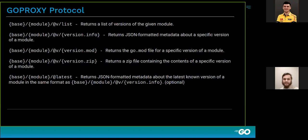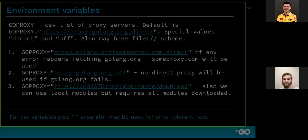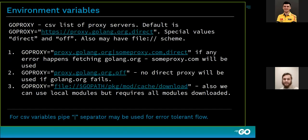We have a version listing endpoint, a version information endpoint, a couple of endpoints for the module go.mod file and for the zip file that contains all the contents of our module, and an optional endpoint that can give us the latest version.